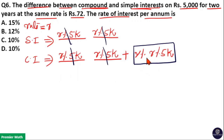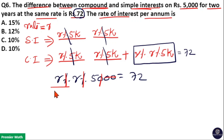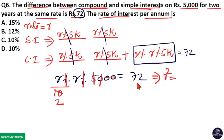The difference between compound interest and simple interest is Rs. 72. So R% of (R% of 5000) equals 72. Simplifying: percentage means 1/100, so canceling the zeros gives R² / 2 = 72, which means R² = 144. Therefore R = 12, that is R = 12%. Option B is your answer.